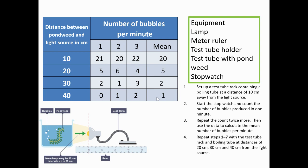We use averages because they give us more accurate data — closer to the true value. If there was a mistake by chance, that might give us an untrue value for the dependent variable. Whereas if you did it multiple times, you can see any anomalies and maybe remove that from the mean. When you get an average over all of the data set, you get a more true value.